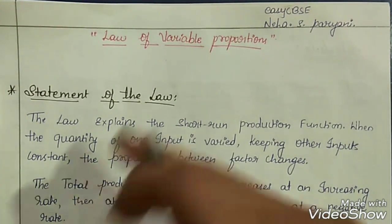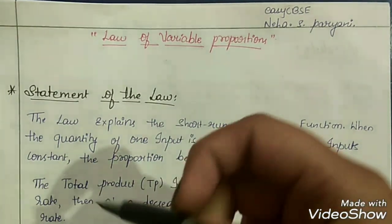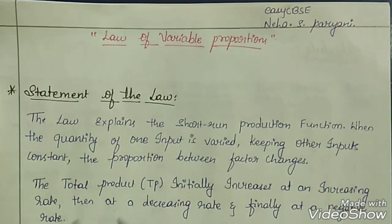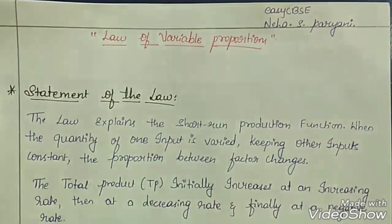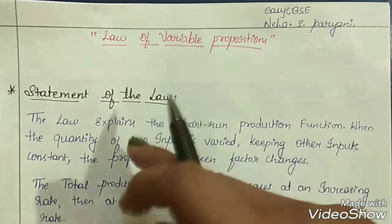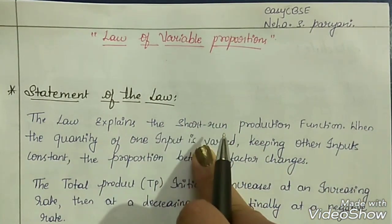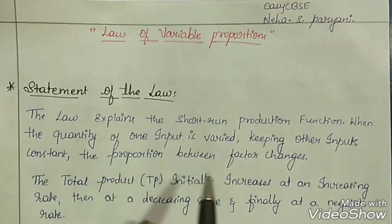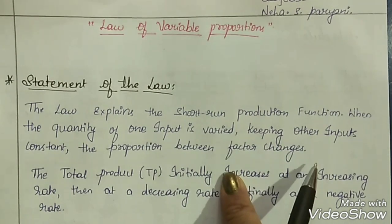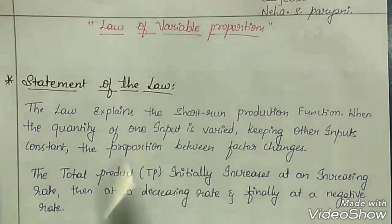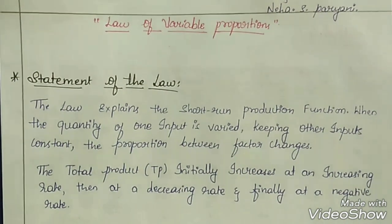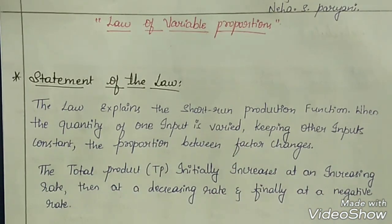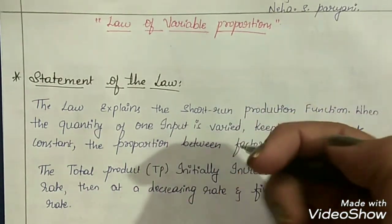Examples of Variable Factors of Production are labor and raw material. Basically, the factors which can be changed in terms of quantity during the production function are known as Variable Factors of Production. The factors which cannot be changed during the production function and have to be kept constant are called Fixed Factors of Production. In the short run, there will be some Variable Factors and some Fixed Factors of Production.